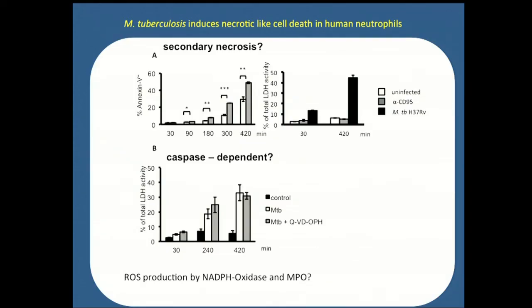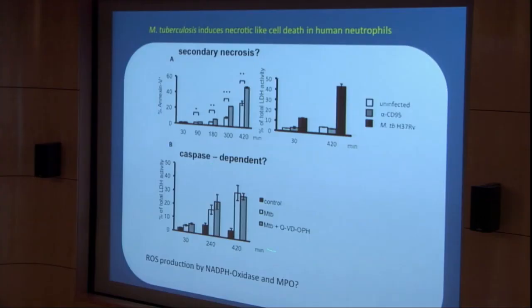One possibility is that our assay time is too long, since neutrophils have a lifetime of approximately eight hours in vitro, and cells could undergo secondary necrosis as they fall apart. But we don't think this is happening because at the same time we see LDH activity with MTB-infected cells, we don't see any activity in uninfected controls or when we increase the number of apoptotic cells with anti-CD95. This also seemed not to be caspase-dependent, because when I added caspase inhibitors to these cultures, we still got the same percentage of LDH activity.